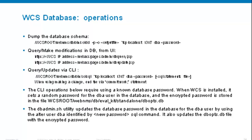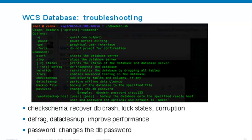For CLI operations, you need to know the database password. When WCS is installed, an encrypted password is set in the dbopts.db file. You can use the dbadmin utility to change the password. Under Linux it's dbadmin, under Windows it's dbadmin.bat. Run dbadmin followed by the word 'password' and your new password — for example, dbadmin password cisco123. That will change your DBA password.